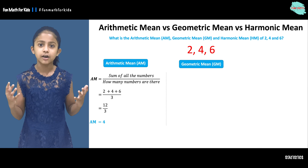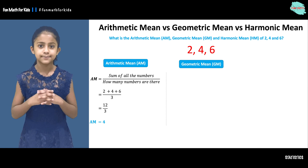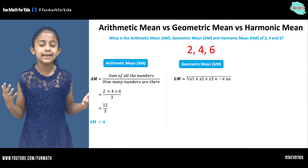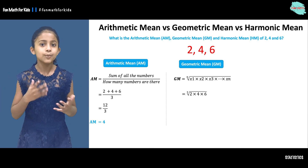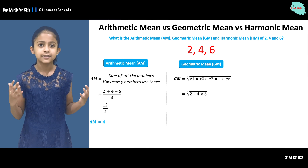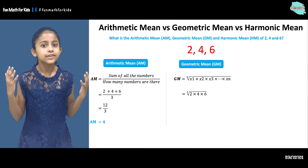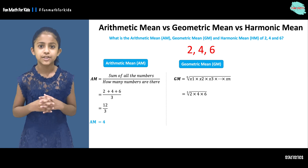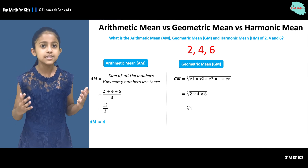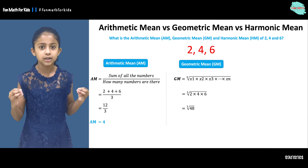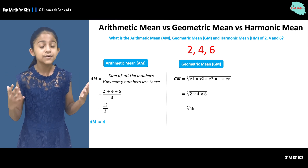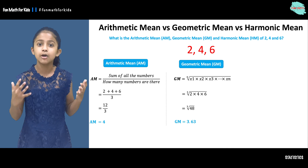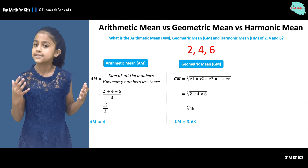So what is the geometric mean of 2, 4, and 6? The formula is the nth root of the product of all the numbers. We take the cube root because there are 3 numbers: 2, 4, and 6. The cube root of the product of all the numbers is the cube root of 48, which gives us the geometric mean of approximately 3.63.